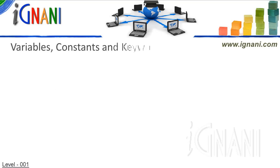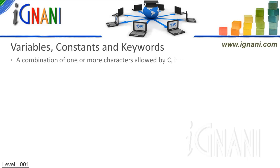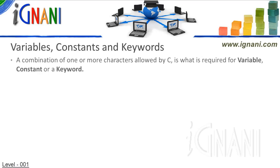Variables, constants, and keywords. When we mix one or more characters supported by C, it becomes either a variable, constant, or a keyword. It's better to start by understanding why they are different rather than knowing the actual words.